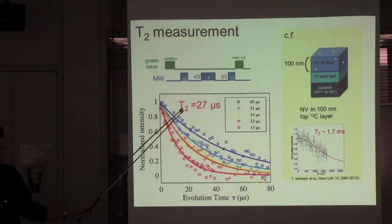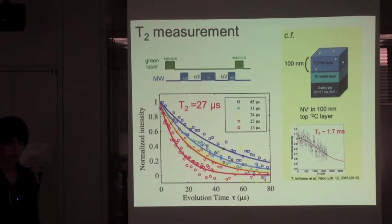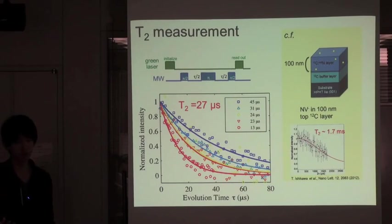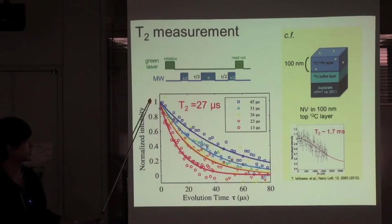The T2 value of NV minus center in 100 nanometer layer was 1.7 millisecond. Our sample of T2 is much shorter than this sample. Why? We suspect that the high nitrogen concentration and the surface paramagnetic center contribute to the short T2.